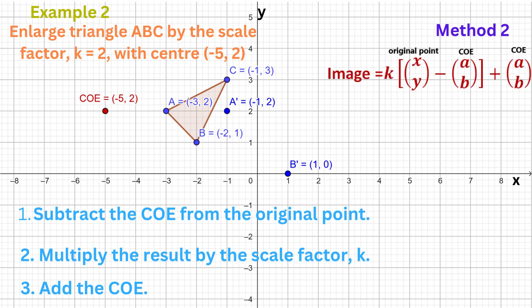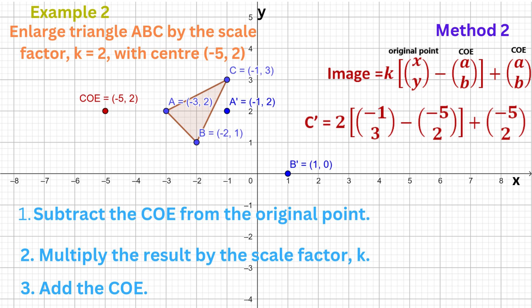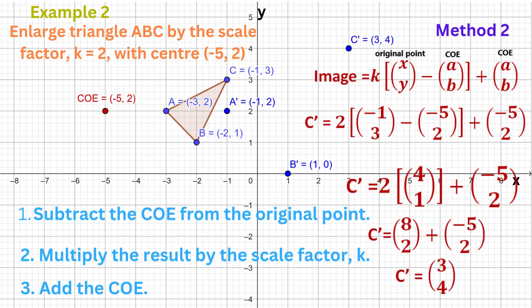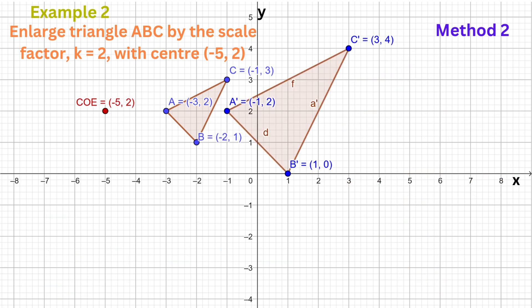Now let's calculate the image of C. The original point C is (-1, 3). Subtract the centre of enlargement (-5, 2): -1 minus -5 is 4, and 3 minus 2 is 1. So the original point minus the centre of enlargement is (4, 1). Multiply (4, 1) by the scale factor 2 to get (8, 2). Add (8, 2) to the centre of enlargement (-5, 2): 8 + (-5) = 3 and 2 + 2 = 4. So the image of C is (3, 4). Connect the points and we have our enlarged triangle.